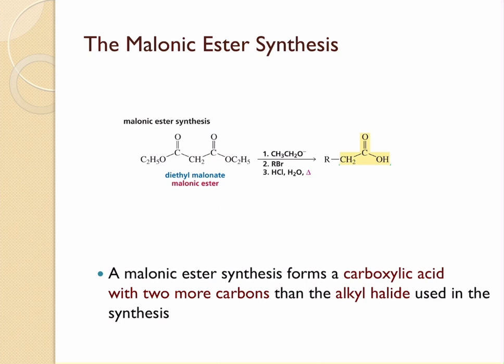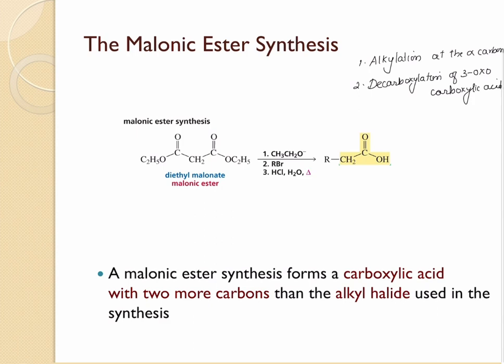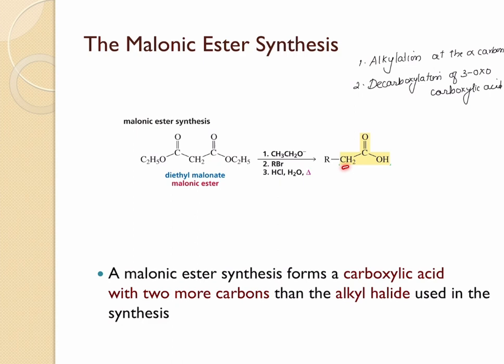Malonic ester synthesis is a combination of two important reactions. The first reaction is the alkylation happening at the alpha carbon, and the second one is the decarboxylation of a beta-oxocarboxylic acid. The base will abstract the alpha hydrogen to create an enolate ion, which acts as a nucleophile on the alkyl halide, followed by acid hydrolysis and decarboxylation. In the final product we have two extra carbons compared to the alkyl halide, and these two extra carbons come from the malonic ester.